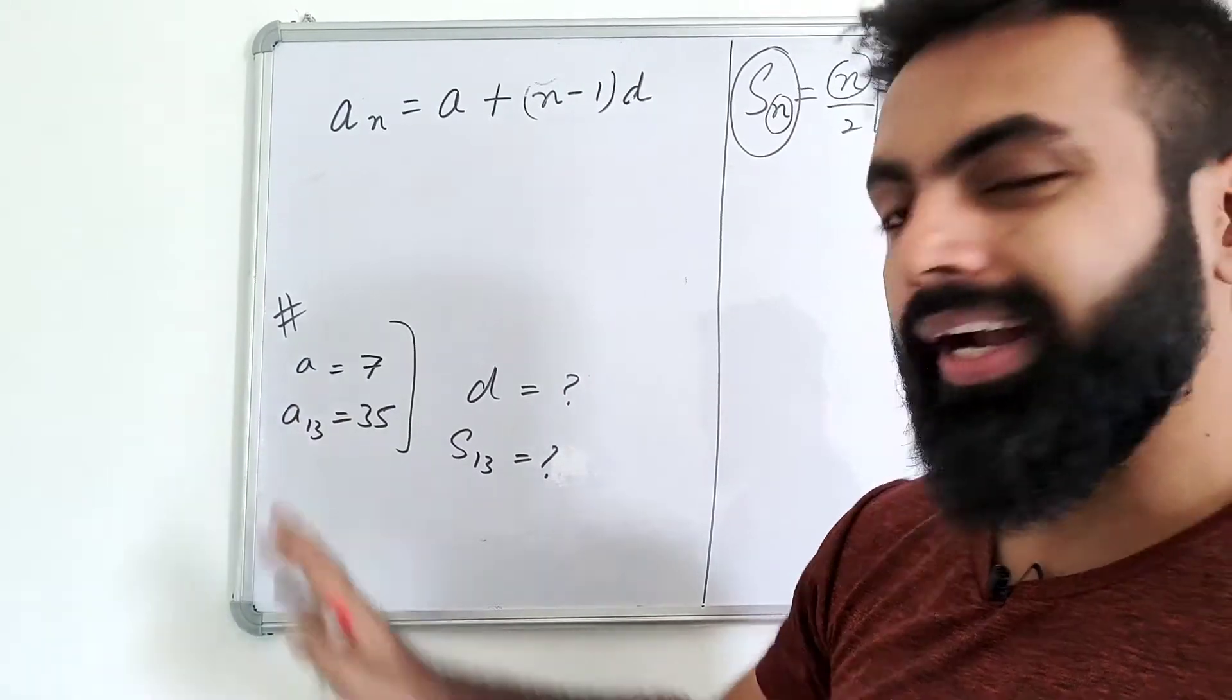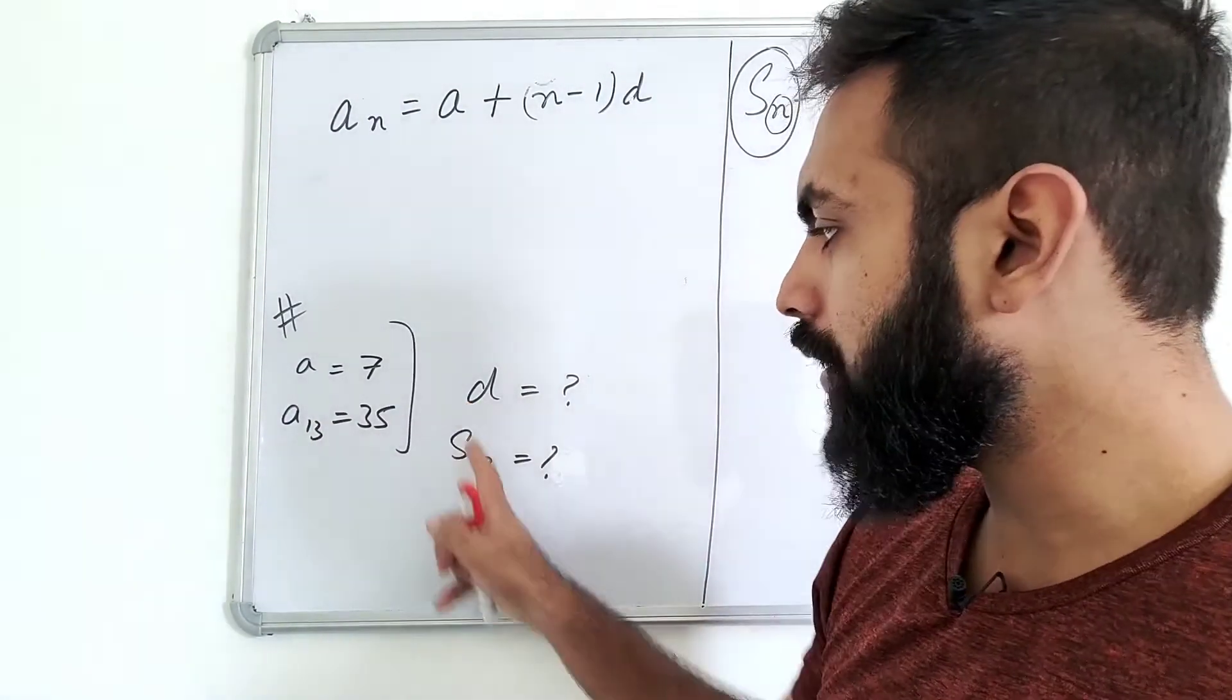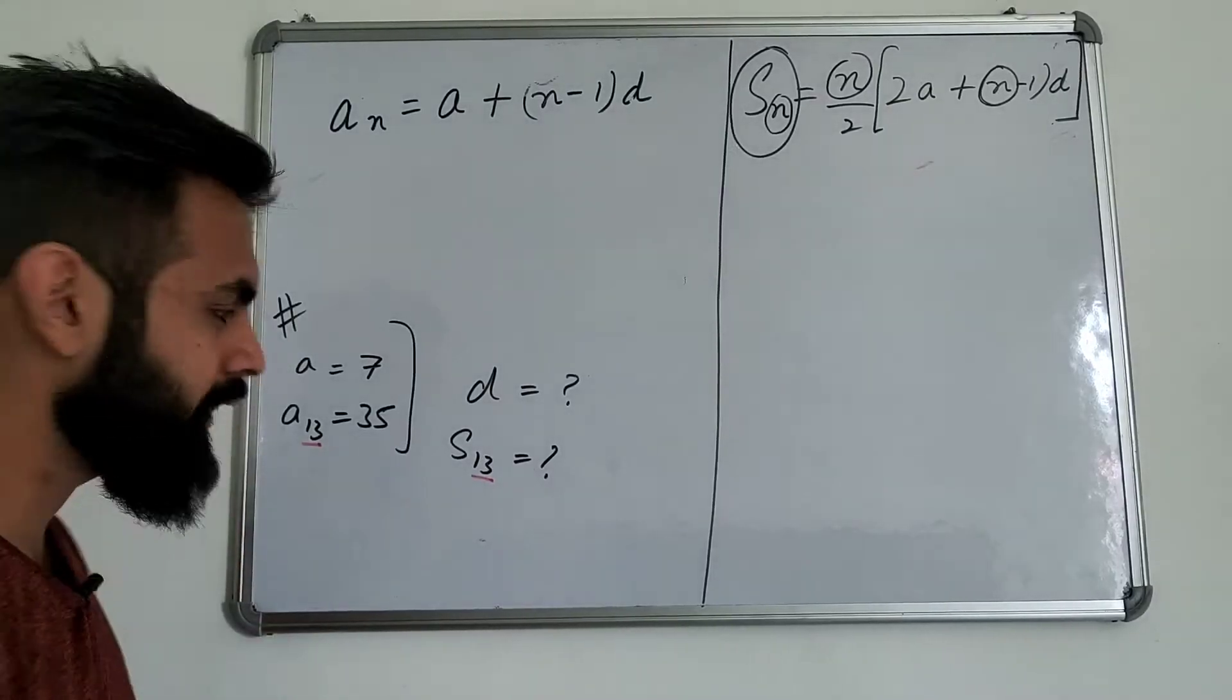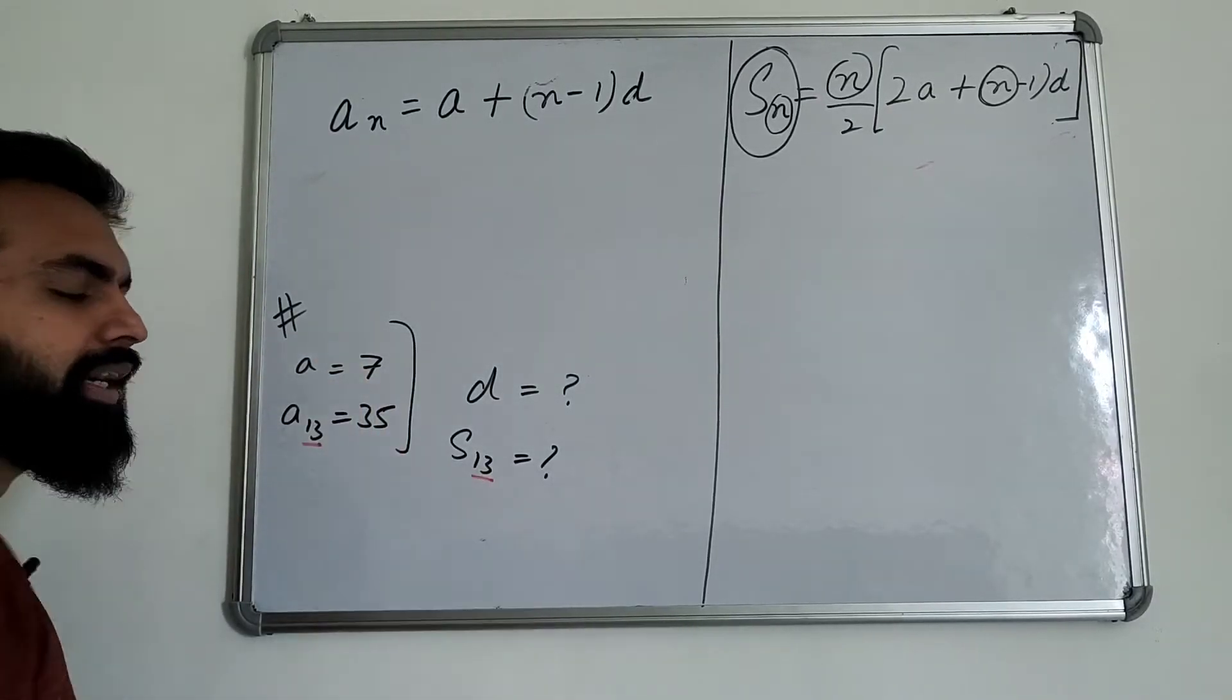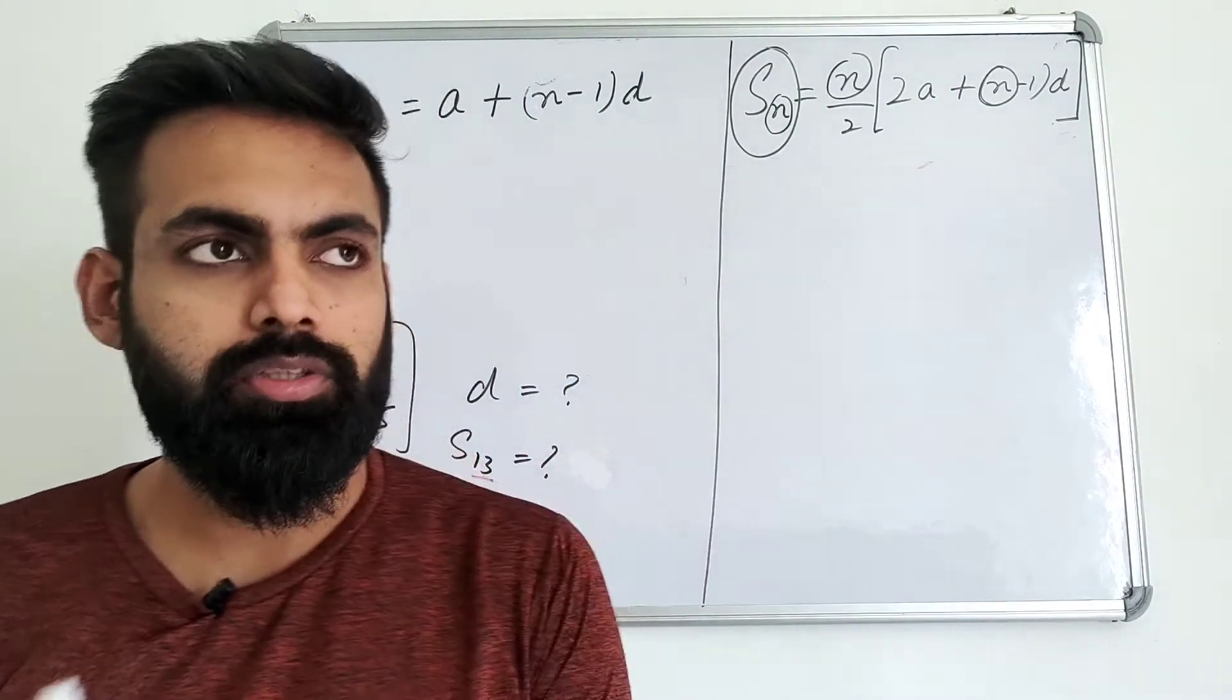Look, here you have a and a13 given—that means 13th term. The first term and the 13th term is given. D and S13 are to be found. It is possible that if a13 is given, then S13 is not asked—S14 is also asked. Okay, let's start.